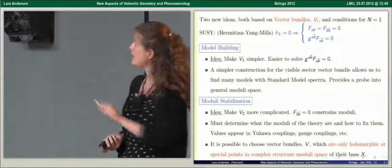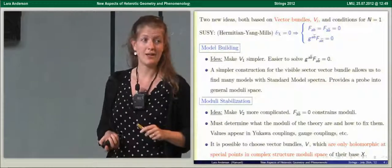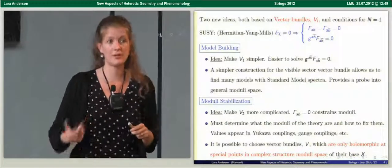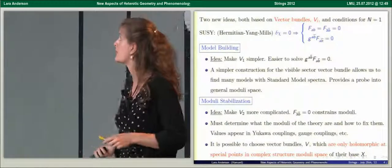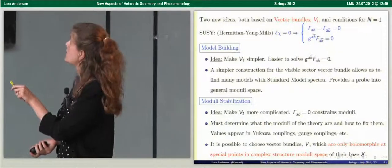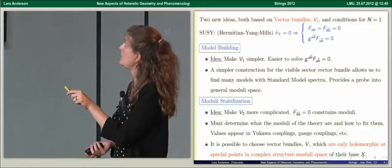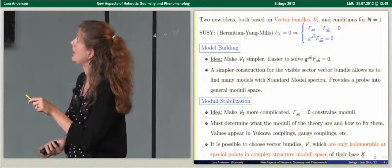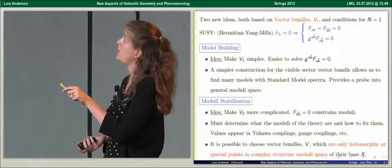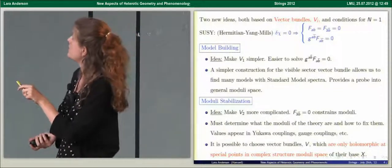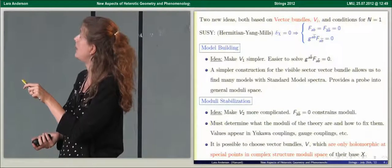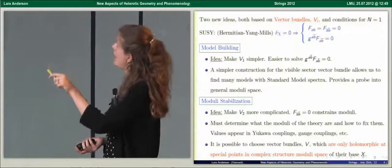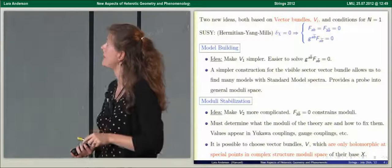I'm going to discuss two strings of work, both aimed at better controlling and developing an effective theory for a large class of geometries. Both ideas are focused on using vector bundles to describe gauge fields over the Calabi-Yau manifold and explicitly using the conditions for N=1 supersymmetry. Geometrically these appear as the Hermitian-Yang-Mills equations — non-trivial conditions relating the field strength of my vector bundles to the Calabi-Yau metric — which I must satisfy in order to have an N=1 vacuum.